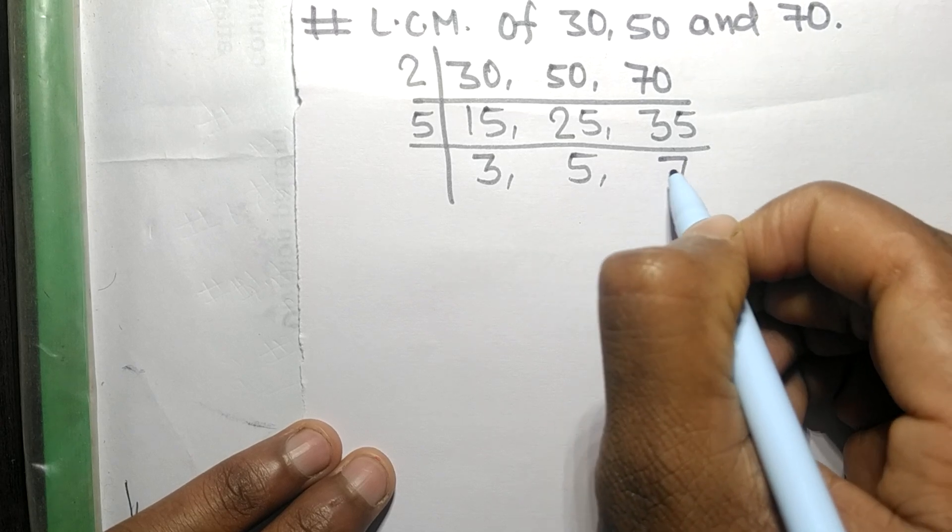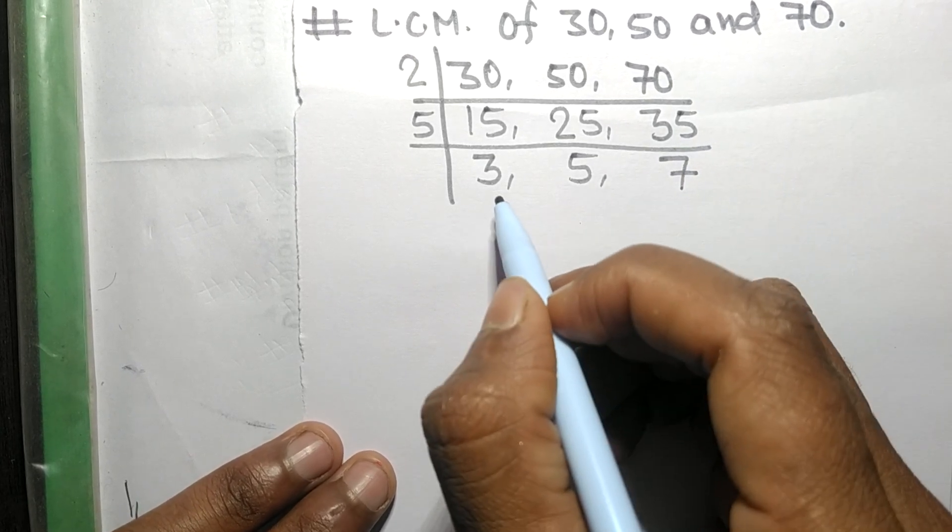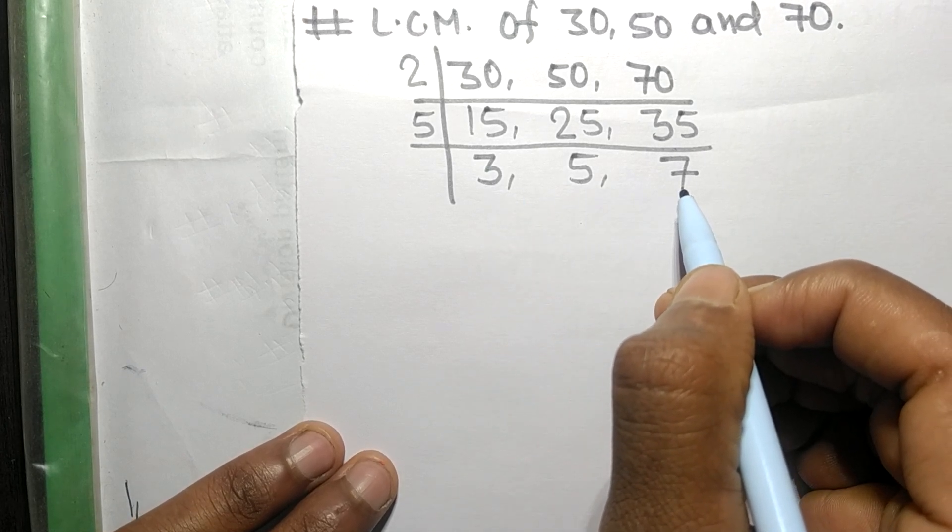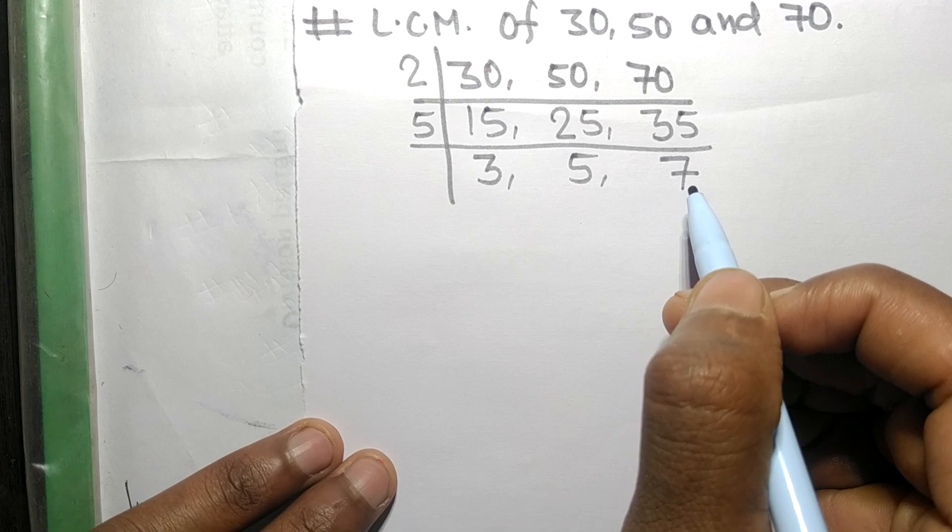Now the numbers 3, 5, and 7 are not exactly divisible by the same number.